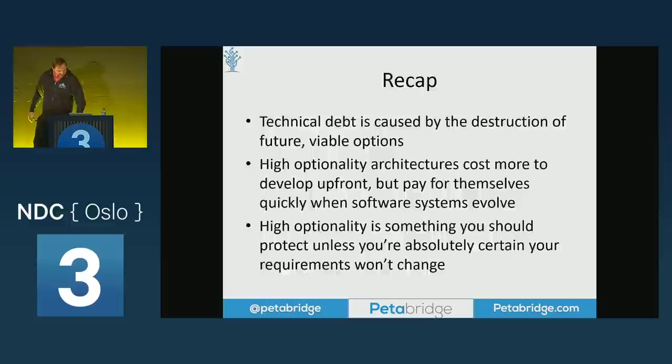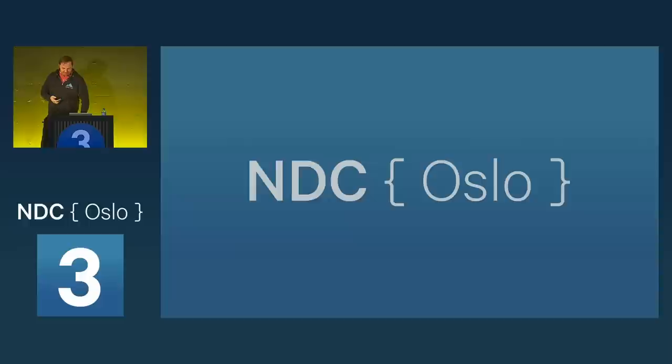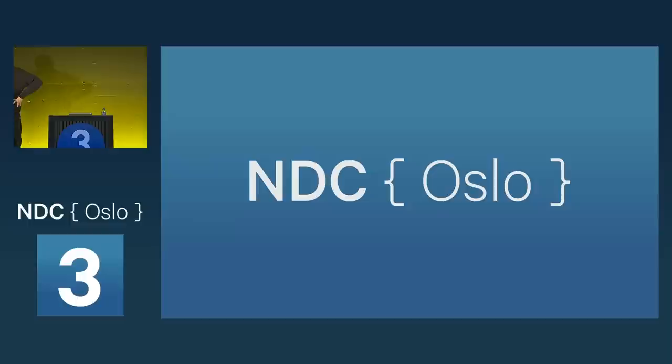That's it for my talk today. You can find my original articles on high optionality architecture at pettibridge.com, and my handle is Aaron on the web where I've tweeted links to more detailed articles on things like extend-only design. Thank you very much. — Question from audience: You talked about the CQRS pattern; in Akka there's something called projections — do you think of projections as a way to address that? Absolutely. We use Akka Persistence Query to do projections, where actors tail persisted events into a materialized view, and how granular that view is depends on the domain.